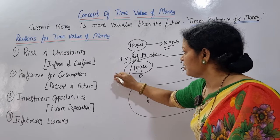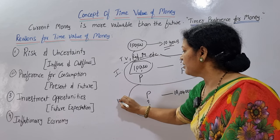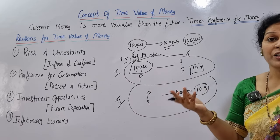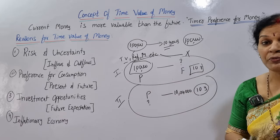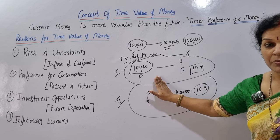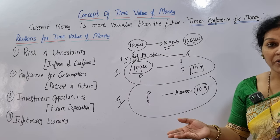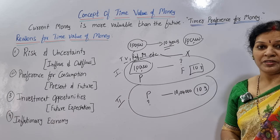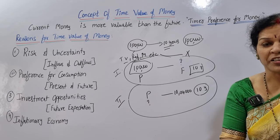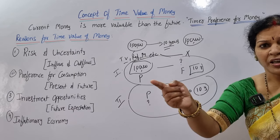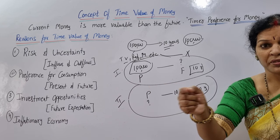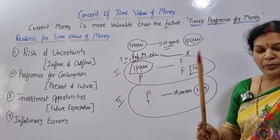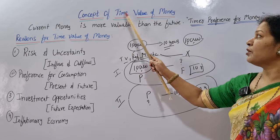So the first concept is: present value is 1 lakh rupees, future value after 10 years is unknown. The second concept is: I don't know the present value, but in future after 10 years the value will be 10 lakh rupees — somebody says 'I'll give you 10 lakh rupees after 10 years' — so what is the present value of that amount right now? These are the two main concepts in Time Value of Money.